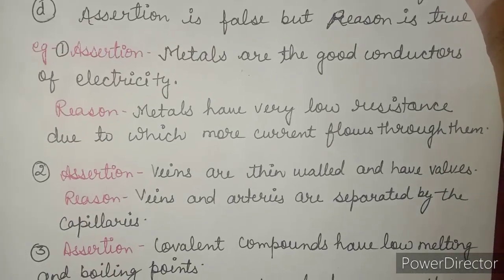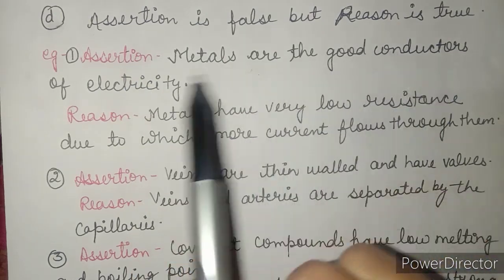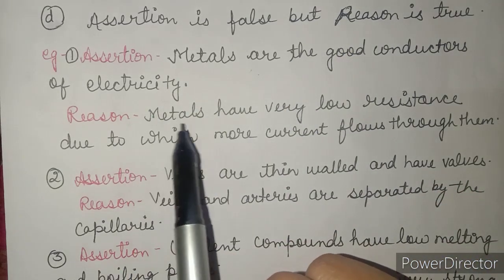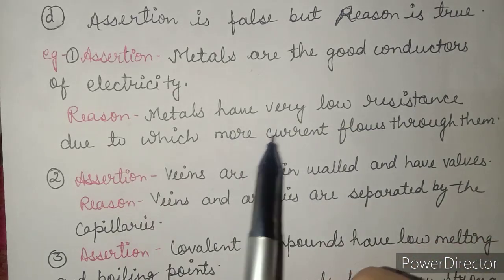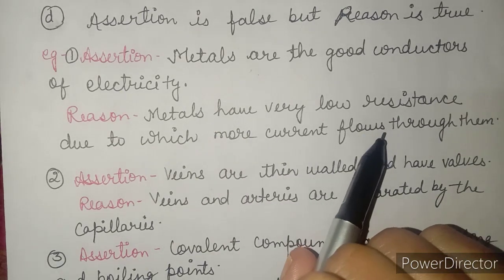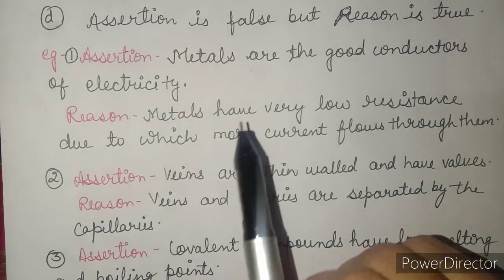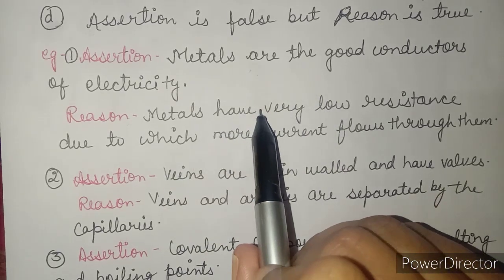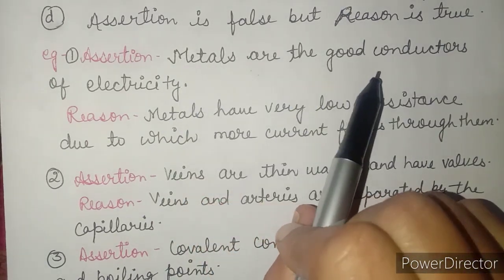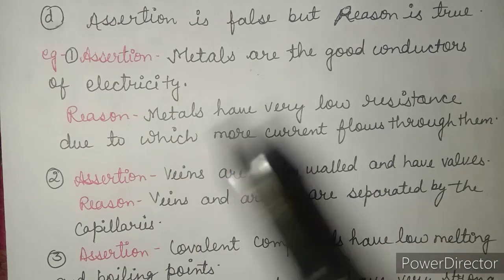Let's take the first example. The assertion is: metals are good conductors of electricity. The reason is: metals have very low resistance, due to which more current flows through them, because resistance is inversely proportional to current. The property of resistance is to oppose the flow of current — if resistance is more, current flow will be less.